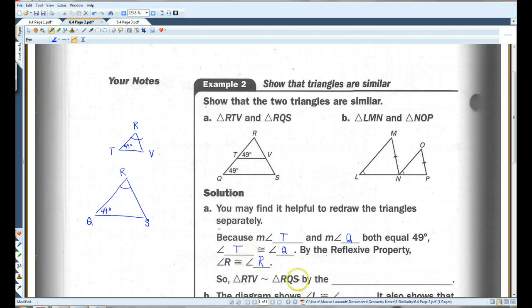So if we have two congruent angles, then the triangles have to be similar by the angle-angle similarity postulate.